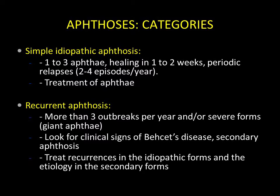Recurrent aphthosis is characterised by more than three outbreaks per year with more or less severe forms. In this case, systematic investigations for an associated disease, such as Behçet disease or secondary aphthosis, must be conducted, and in addition, recurrences must also be managed.